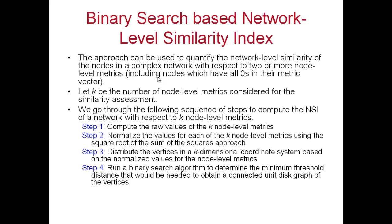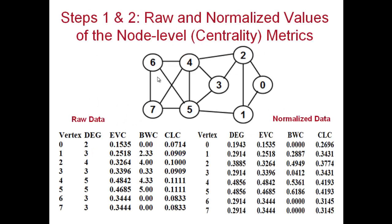Let k be the number of node level metrics considered, where k must be greater than or equal to 2. There are four steps in this process. The first step is to determine the raw data to use as the basis for the network level similarity assessment. For example, if you are interested in centrality metrics, generate the centrality metric values for the given graph.